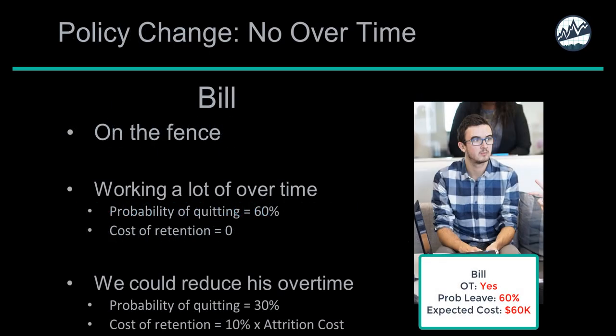Bill is on the fence, working a lot of overtime coded as yes in the data. He has a probability of quitting of 60%. We could reduce his overtime — generating new H2O predictions with overtime toggled to no — and his probability drops to a 30% chance of quitting. However, there is a cost associated with the overtime reduction, estimated as 10% of Bill's attrition cost.